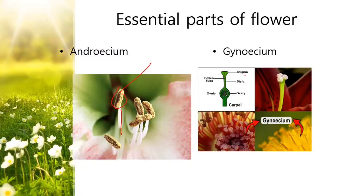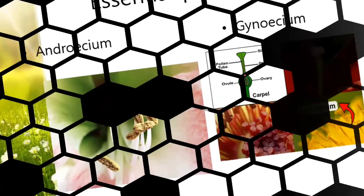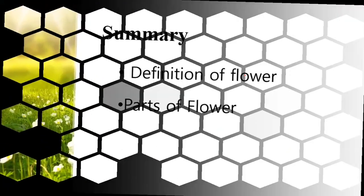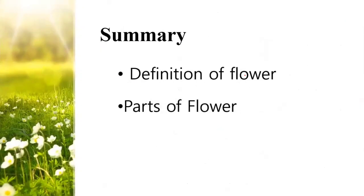These are the two essential parts of the flower. The structure of the flower is now complete. In this part of the video we covered the definition of the flower, the flower as a symbol, and the parts of the flower. This completes the first part of this chapter - that is, the structure of the flower.